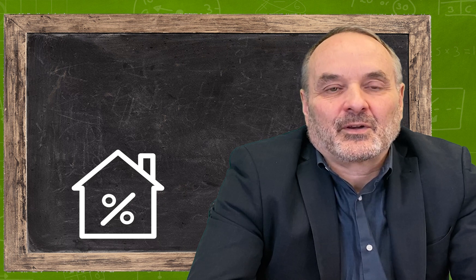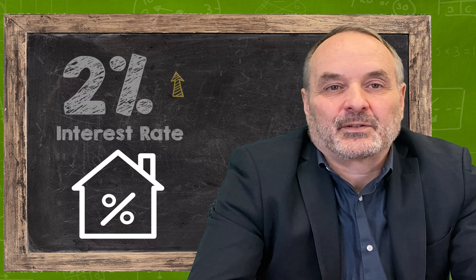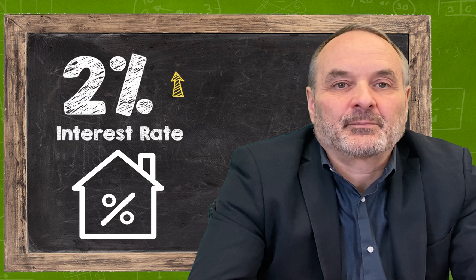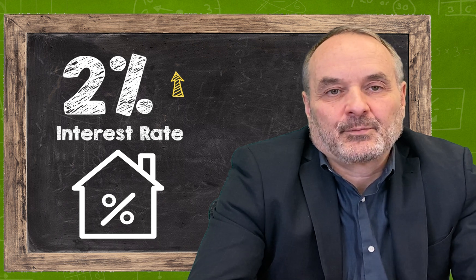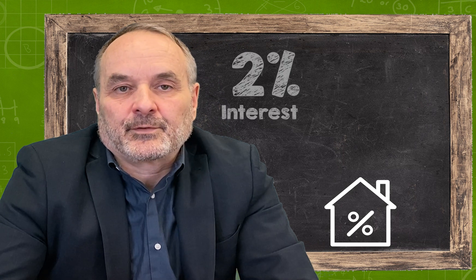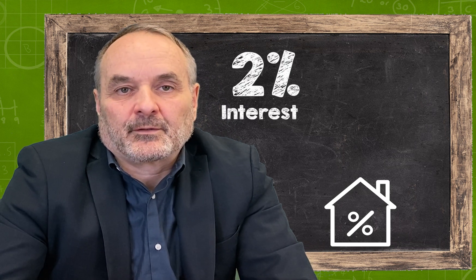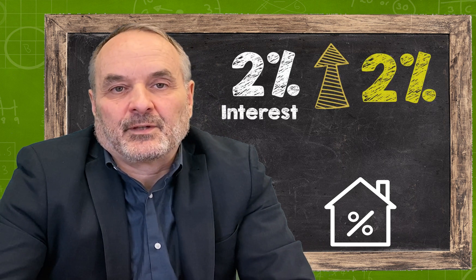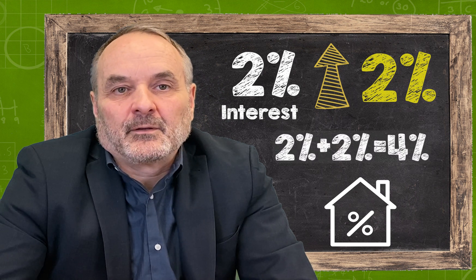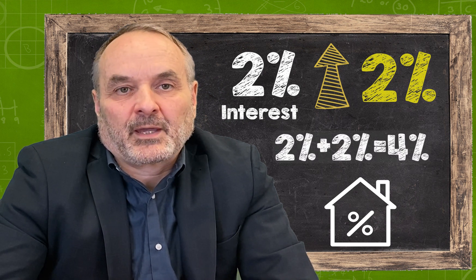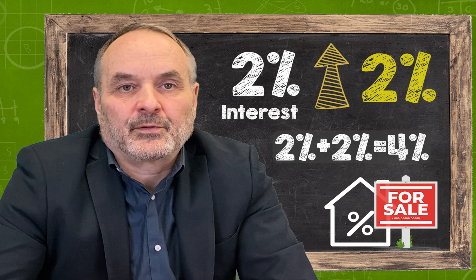If the mortgage rate on your house goes up by two percentage points, you might think you'll still be able to make your monthly payments because two percentage points sounds like a very small change. But suppose your interest rate itself is only two percent. Then a two percentage point increase could double your rate to four percent, and this could significantly increase your monthly payments and force you to sell your house.